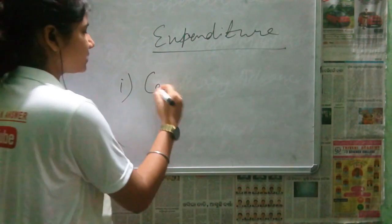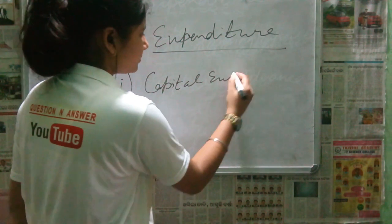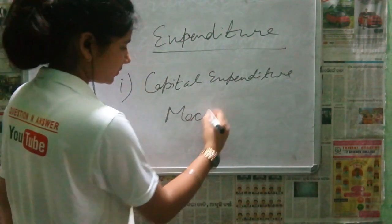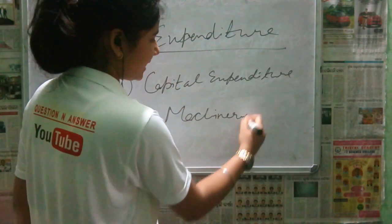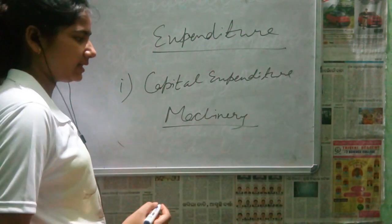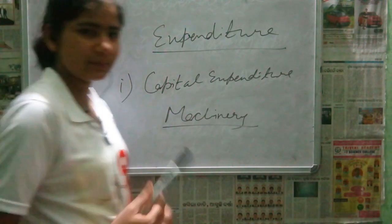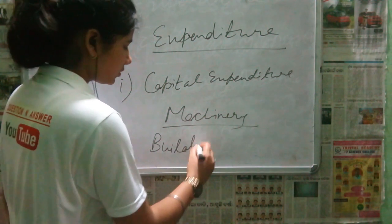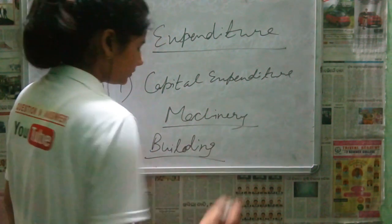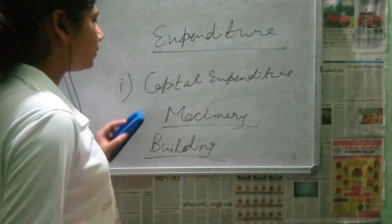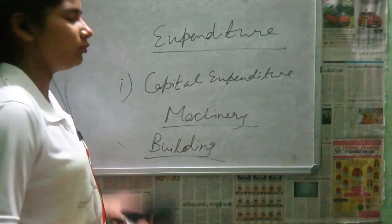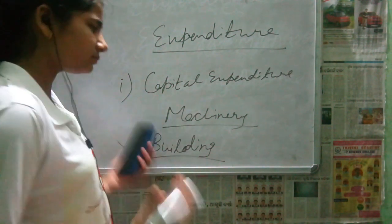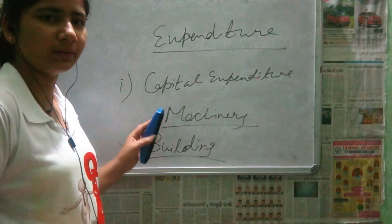Now moving to expenditure. The first type is capital expenditure. For example, if we have bought a machine, we have invested in it because the machine will be used for ten years. Whatever we invest for long-term future use — such as machinery — is called capital expenditure.